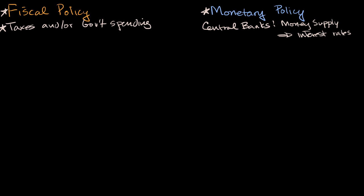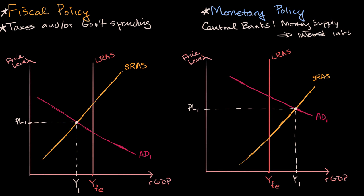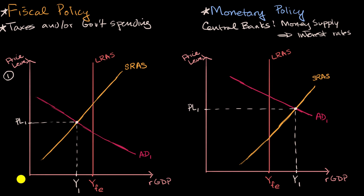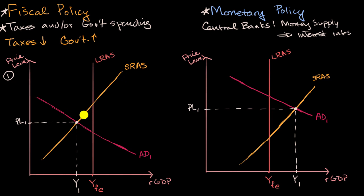With that primer out of the way, let's look at two different scenarios for an economy. In scenario one, you can see that our equilibrium level of output, y sub one, is below our full employment output. So here we have a negative output gap. From the federal government's point of view, they might want to do some expansionary fiscal policy in order to shift the aggregate demand curve to the right. That could mean lowering taxes — people would have more money in their pockets, corporations might have more to invest with — or the government could just directly spend more, which would also shift aggregate demand to the right.